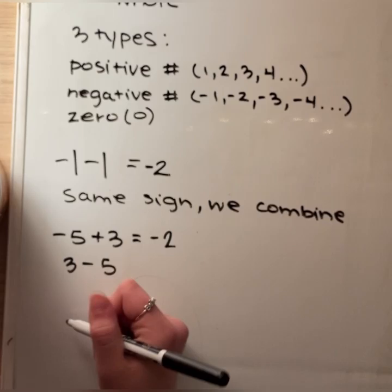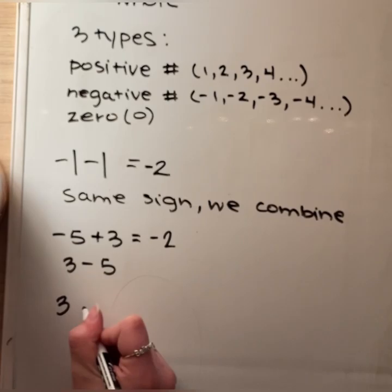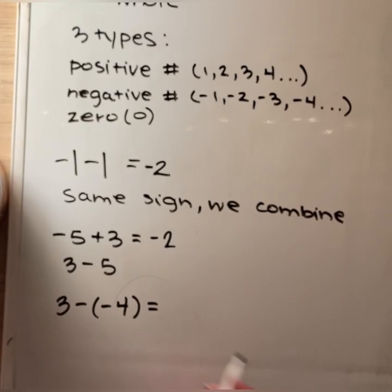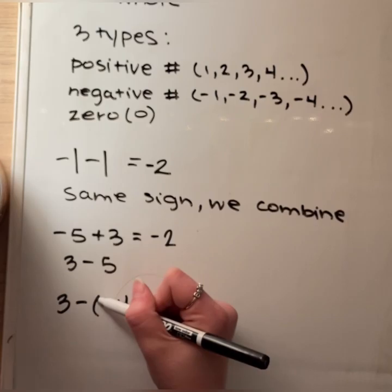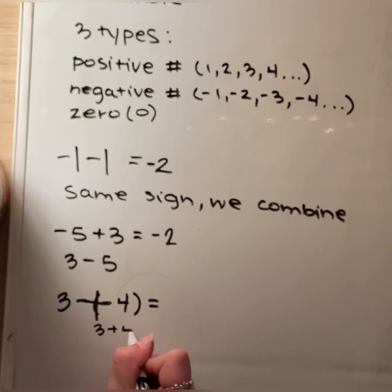Another type of problem we may see is two subtraction signs in the same section of our equation — for example, 3 minus negative 4. We see these two negative signs, and it's like you can combine them and make a positive. So we add 3 plus 4, which gives us a total of 7, a positive 7 because there are no negative values anymore.